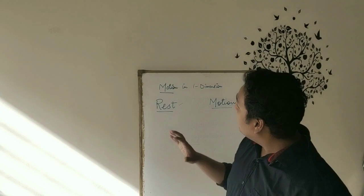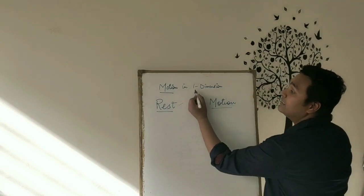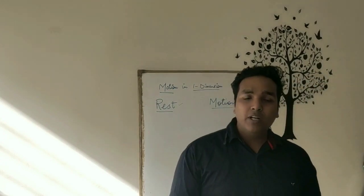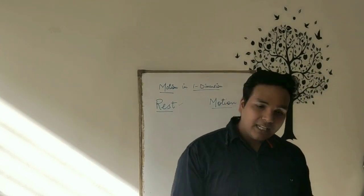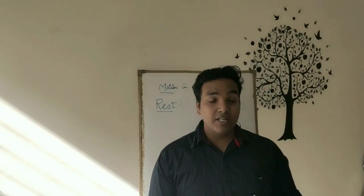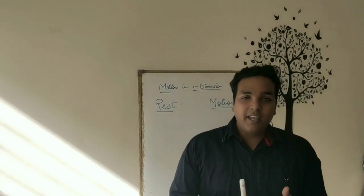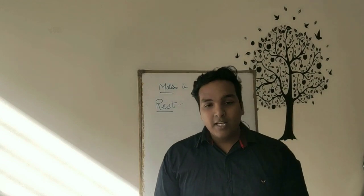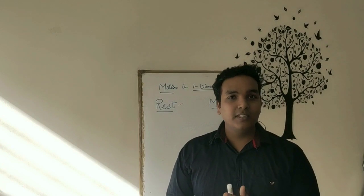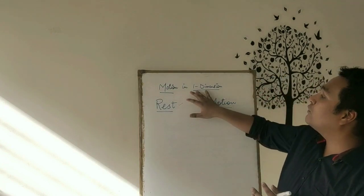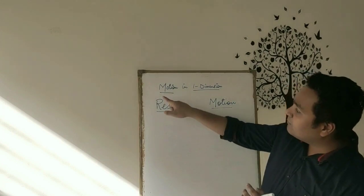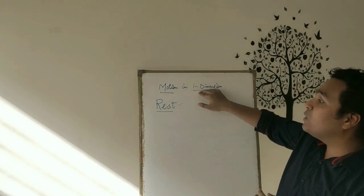Now the other term is one dimension. When a body moves in a straight line path, it is termed as one dimension. It can be vertical and it can be horizontal. The best example I can give is a car moving in a straight path, which is an example of one dimension. So now we have understood the meaning of the topic, that is Motion in 1D.